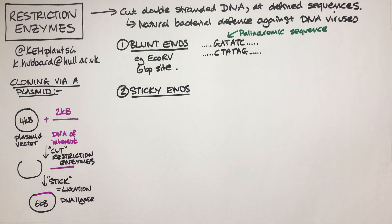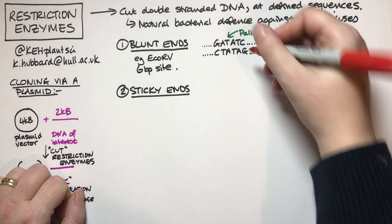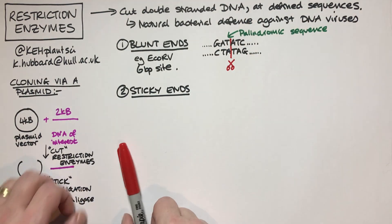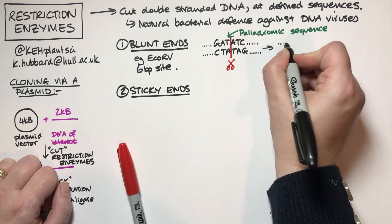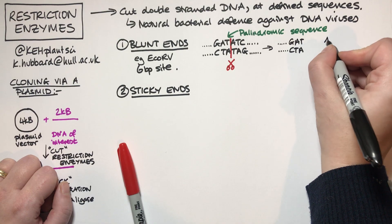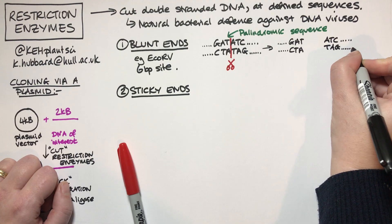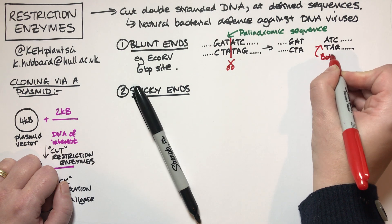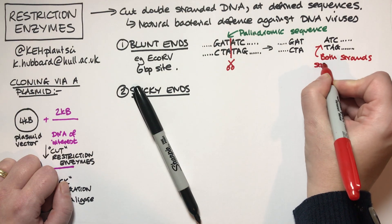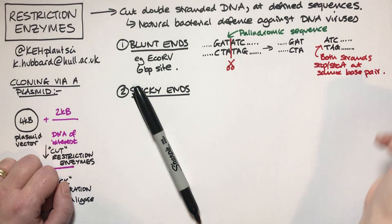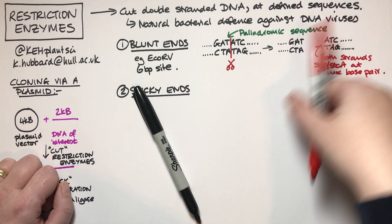For a blunt end cut, what happens is it cuts both strands at the same point. When EcoRV cuts the GATATC sequence, both strands stop and start at the same base pair — there's a clean cut where T and A are directly above each other, and that's where the cut is. This results in two blunt-ended fragments.